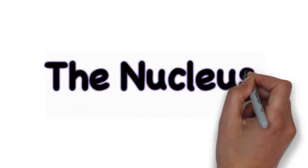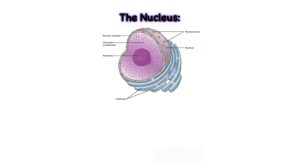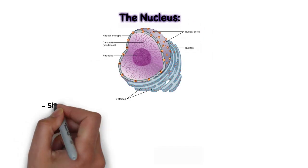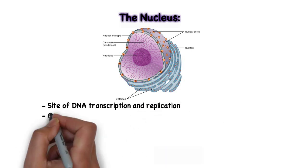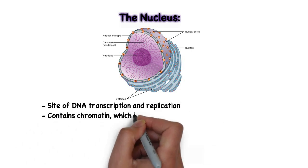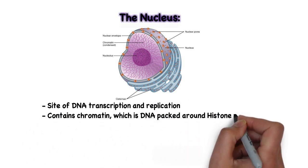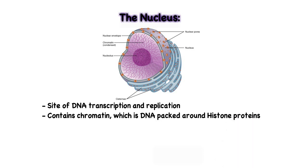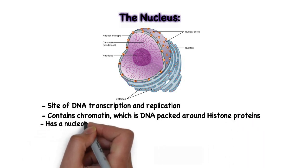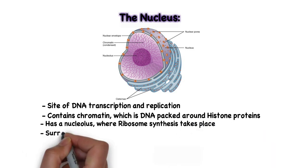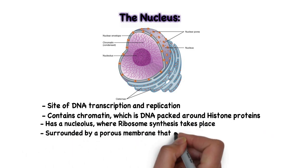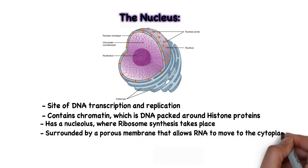The nucleus is where DNA is present in the cell. It is also where transcription and replication of DNA takes place. The nucleus contains chromatin, which is basically DNA packed around histone proteins. It also has a nucleolus where ribosomes are synthesized. The entirety of this organelle is surrounded by a double-layered porous membrane that allows RNA to move into the cytoplasm of the cell.